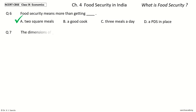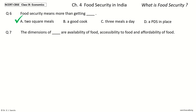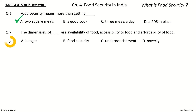Question 7: The dimensions of dash are availability of food, accessibility to food, and affordability of food. The options are: hunger, food security, undernourishment, poverty. Your time to choose. And the answer is food security. So the dimensions of food security are availability of food, accessibility to food, and affordability of food.